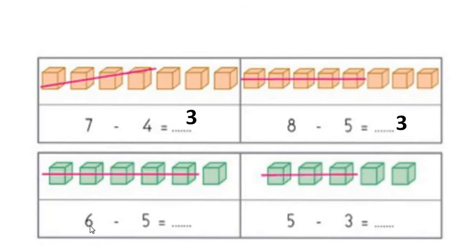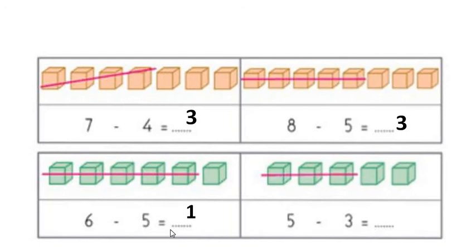The sum is 6 minus 5. We have 6 objects. I should cut or reduce 5 objects from the given 6: 1, 2, 3, 4, 5. How many objects are remaining? 1. So 6 minus 5, the difference is 1.